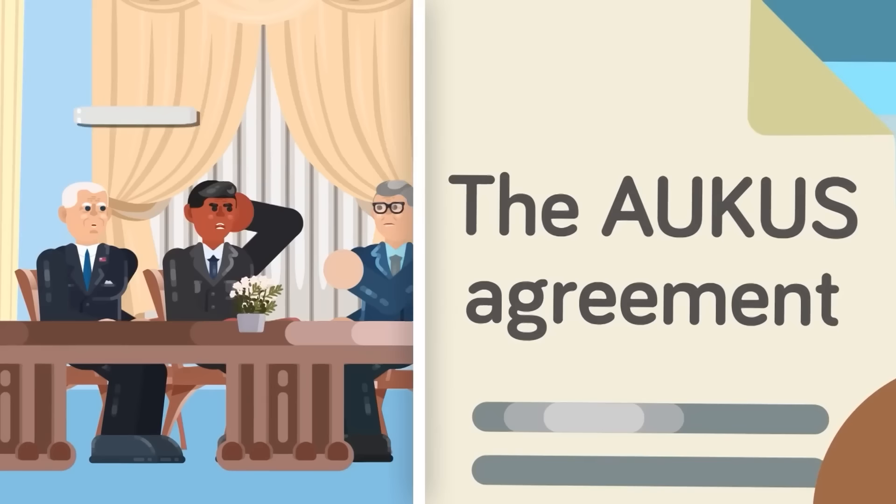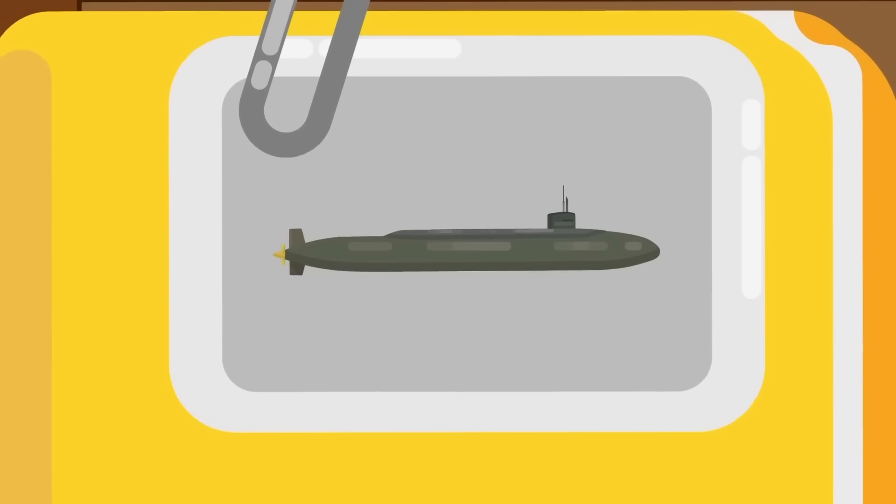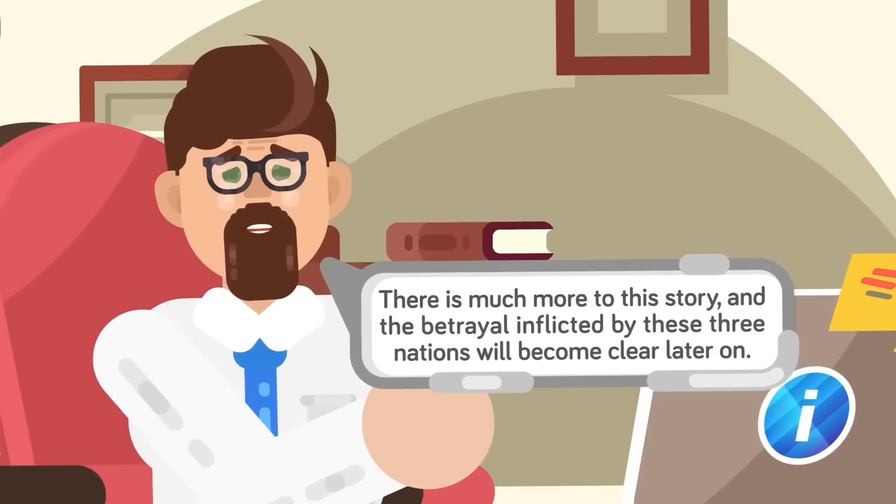The initial AUKUS meetings were done in secret without the knowledge of the rest of the world, even though Australia had already had a previous deal with another country to build submarines. There is much more to this story, and the betrayal inflicted by these three nations will become clear later on. But first, let's look at why Australia having nuclear powered subs has China on edge.